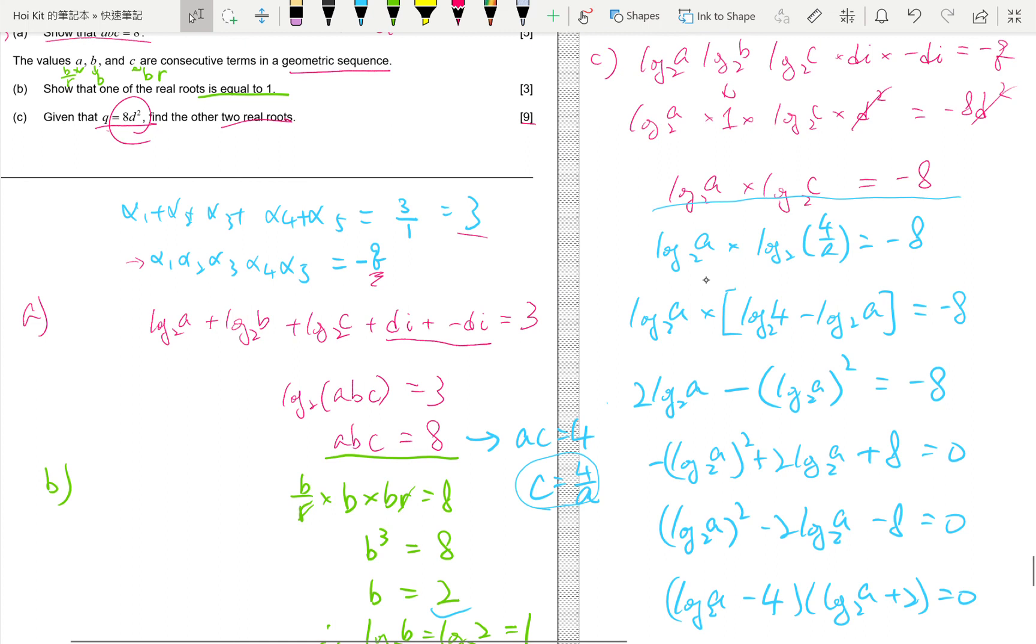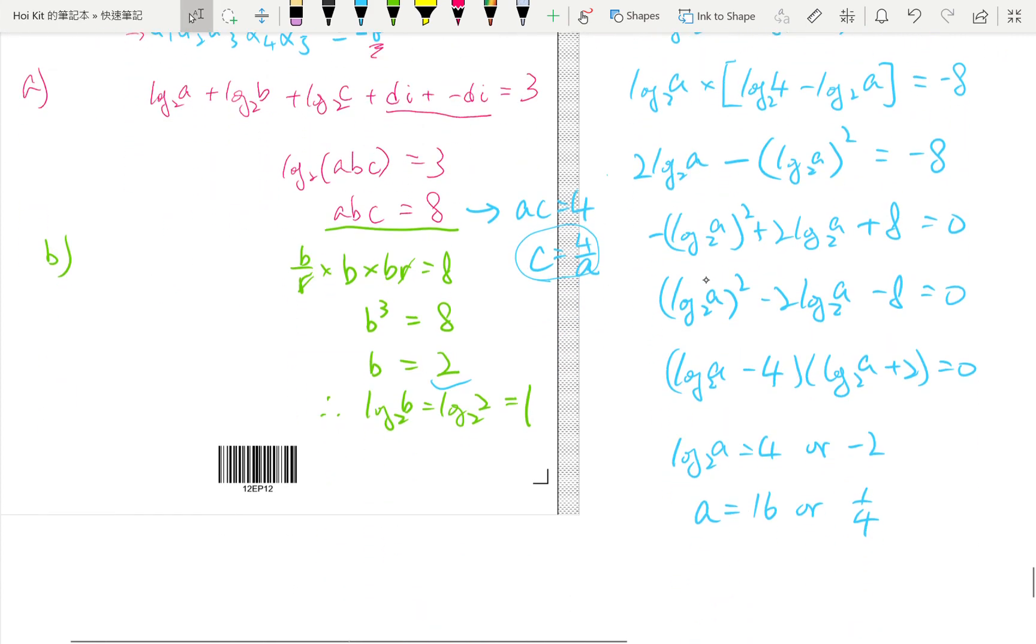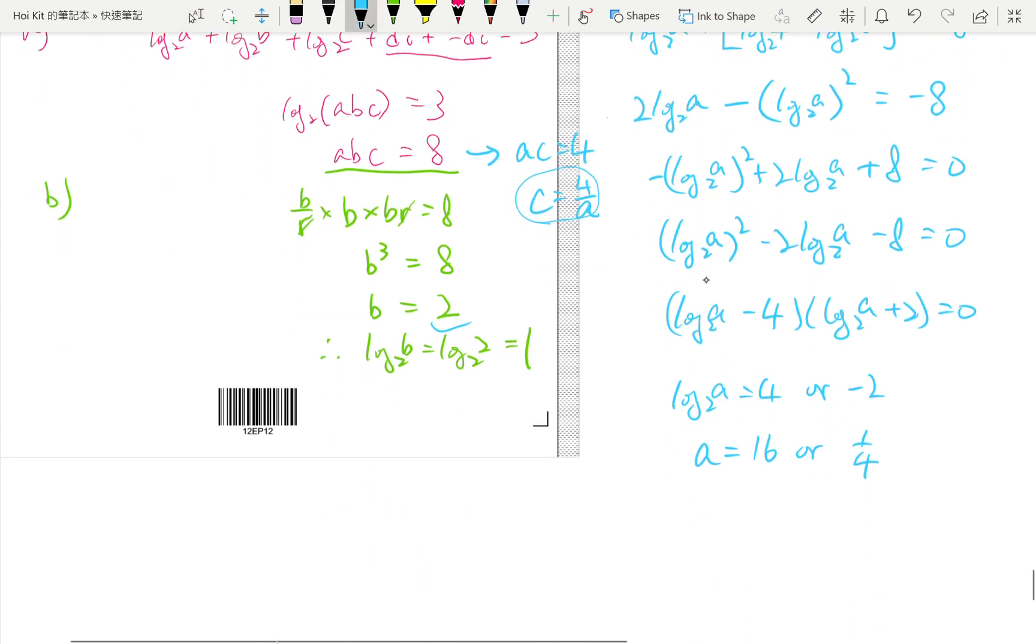a and c are symmetric. Which means, if you swap a to c and c to a, you actually get the same equation. What that mean is, if one of the questions, one of the answers is a, and the other is automatically c. Okay. For example, if a is 16, then c will automatically be 1 fourth. And when a is 1 fourth, then c will automatically be 16.